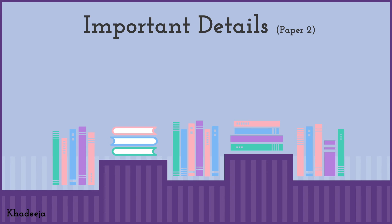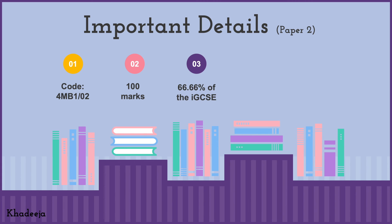Now let's look at Paper Two. The code is 4MB1/02. This paper is also out of 100 marks, but it constitutes 66.66% of the entire Maths IGCSE — a bigger share. So if you do poorly in Paper Two, your grade will be significantly affected. You have to be very careful and practice a lot of Paper Two past papers.